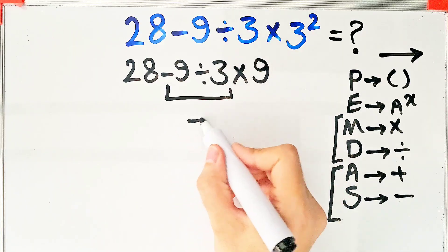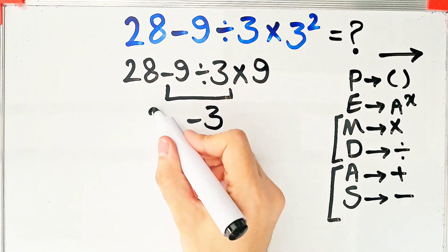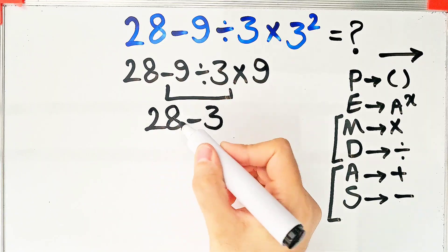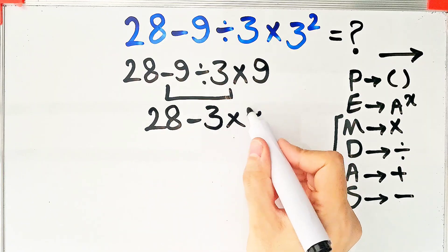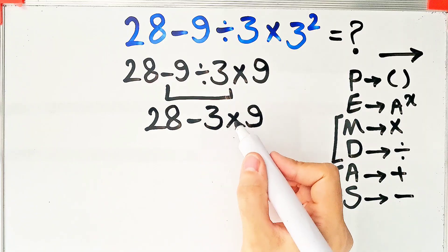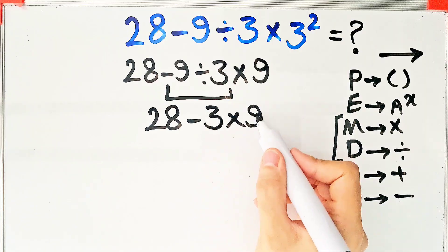Now we have 28 minus 3, then times 9. In this step, we have subtraction and multiplication. First we do this multiplication.